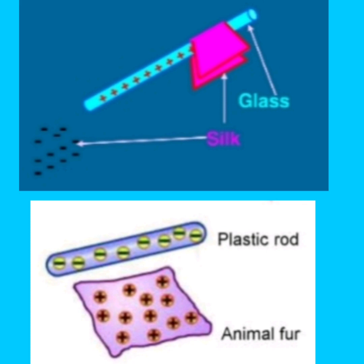From these attraction and repulsion observations we get the electrostatic series. In this series, the material higher up acquires a negative charge and the material lower down becomes positive, because the upper material gains electrons and the lower one loses them. The electrostatic series can be very long, but four commonly used ones are: plastic, fur, wool, and glass.